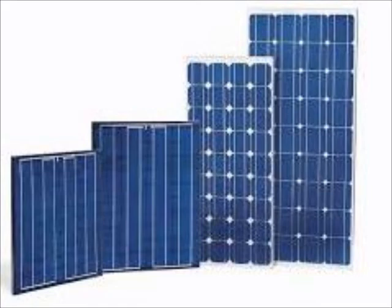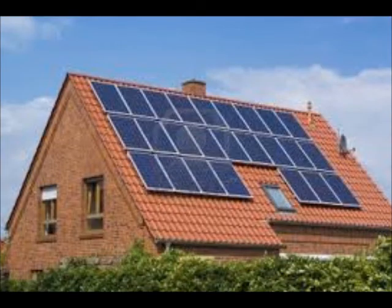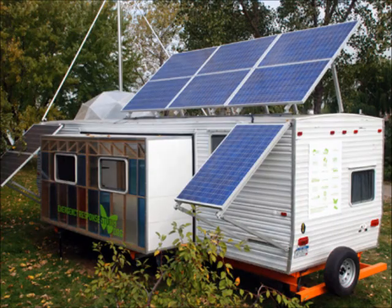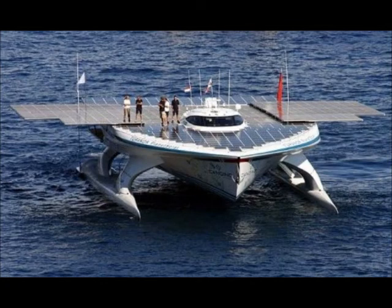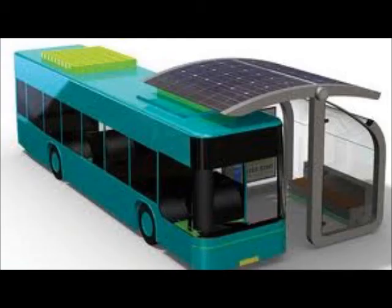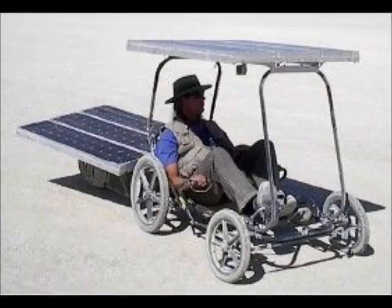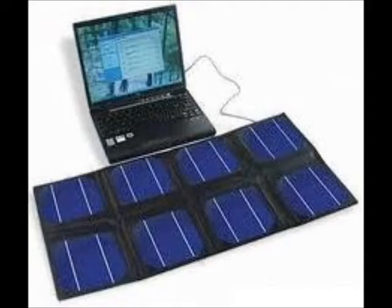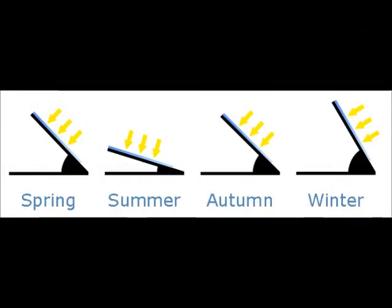Solar panels can be used on the roofs of houses, in trailers, caravans, boats, bus stations, tents while travelling, on bicycles, and so on and so forth. The position of a photovoltaic panel affects its power generation.